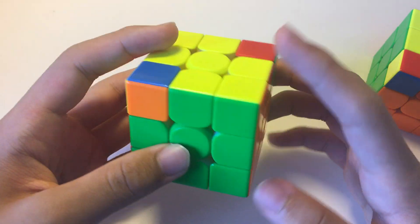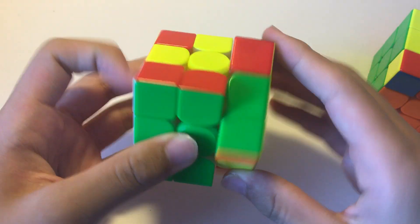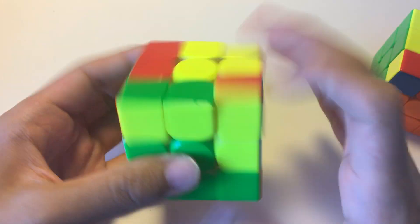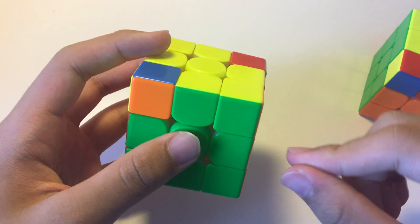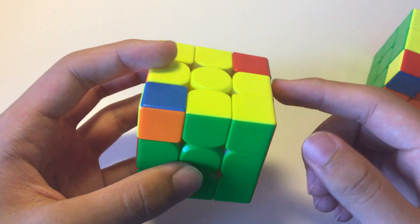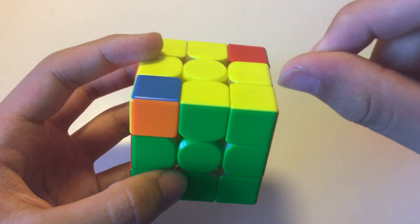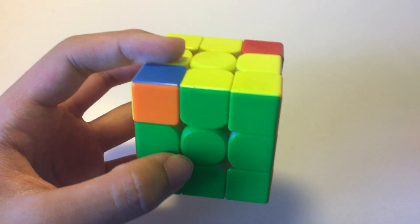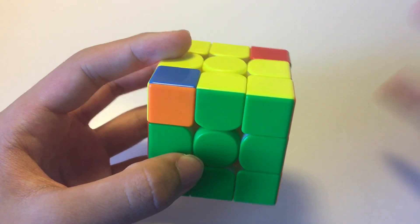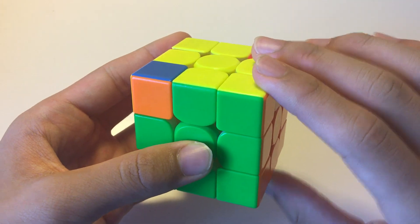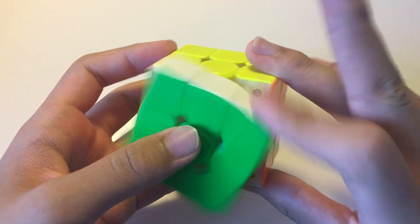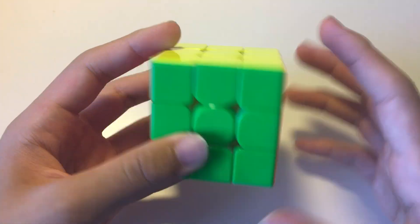So for this case, we do F and then T perm and then F prime. But the last move of the T perm is also F prime. And then we have to undo the F, which is essentially doing F prime. So if you follow what I mean, it is basically ending the T perm with F2. So again, we'll do this F and then T perm, but we can just do F2 at the end to make the algorithm faster.